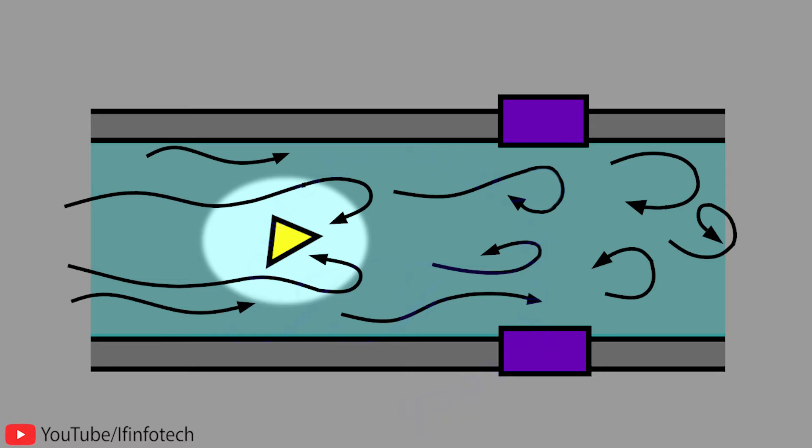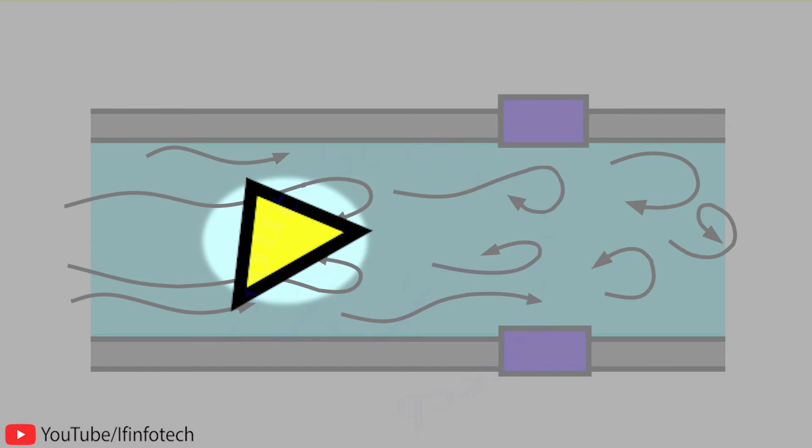In Vortex Shedding Flow Meter, flow path is obstructed by a bluff body that creates vortex shedding. Here, the bluff body occupies less than 20% of the inside diameter of the pipe.